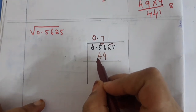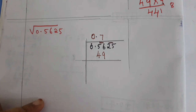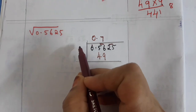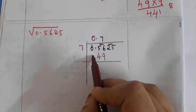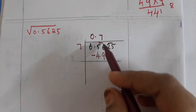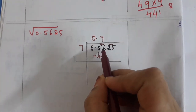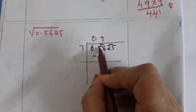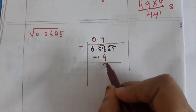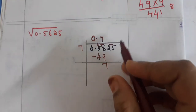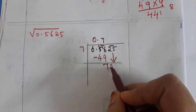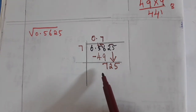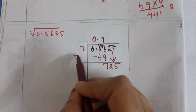In square numbers nearer to 56: seven sevens are 49, eight eights are 64. We cannot take 64 since it is greater than 56, so we take 7 — seven sevens are 49. Write 7 here. Minus: 56 minus 49 — borrow from the tens place, 16 minus 9 is 7, 4 minus 4 is 0. Bring 25 down to get 725.